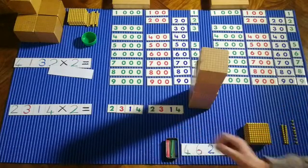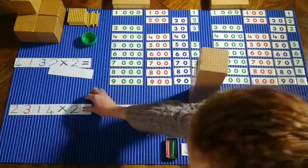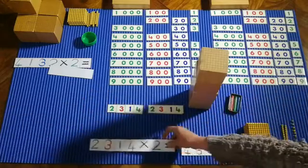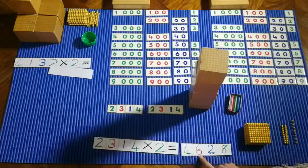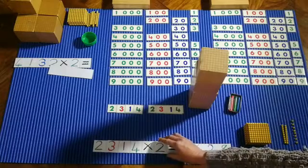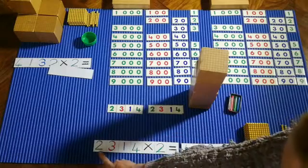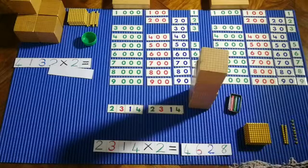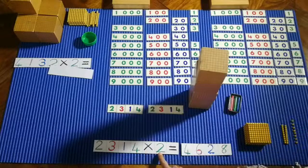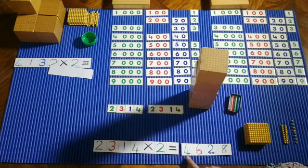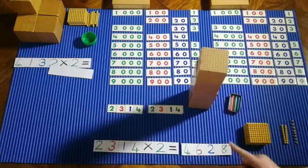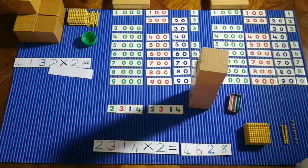And our product is four thousand, six hundred and twenty-eight. So let's look one more time. 2,314 times 2 equals 4,628. And that's our product.